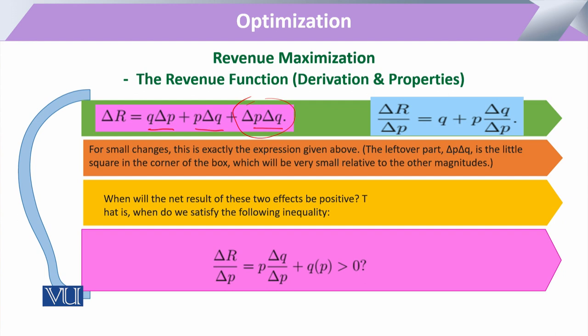When we want to measure the rate of change in revenue with respect to price — that is, at what rate revenue was changing due to a further change in price — we divide by ΔP. Dividing by ΔP gives us Q on one side, and ΔQ divided by ΔP multiplied by the original price P on the other.